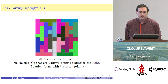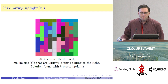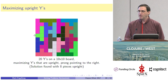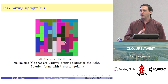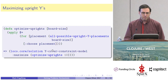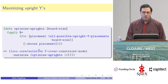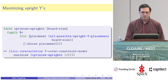With Loco you can also do certain kinds of optimization. This example shows maximizing the number of upright Y's — where upright Y is defined as that specific shape in the upper left corner. It found a solution with eight upright Y pieces, and that's the best you can do. The code uses the maximize keyword when calling solution, maximizing the sum of all placement variables that are upright Y placements moving left to right across the grid.